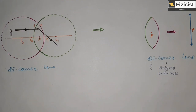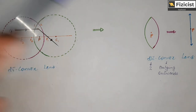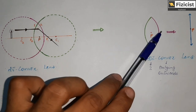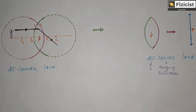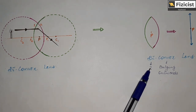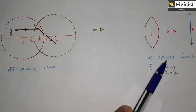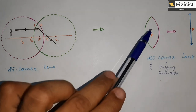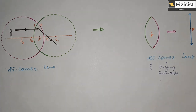This is how exactly a biconvex lens looks like, in which both the surfaces are bulging outward. The name itself explains: bi means two and convex means bulging outwards, so in a biconvex lens both the surfaces are bulging outward.